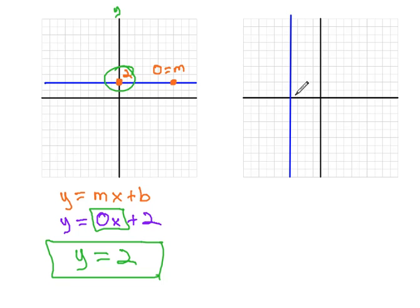It's a vertical line that goes through the x-axis. At what point does it go through the x-axis? At negative 4, we can see then that the equation must be x equals negative 4.